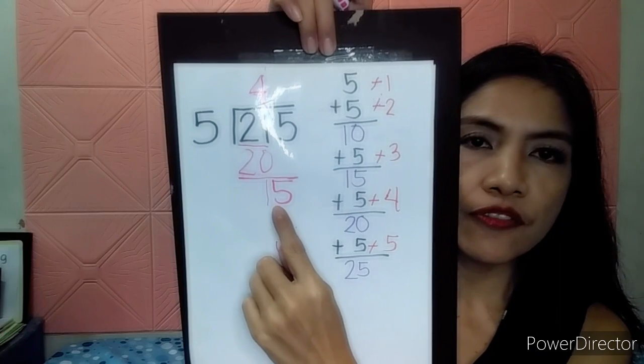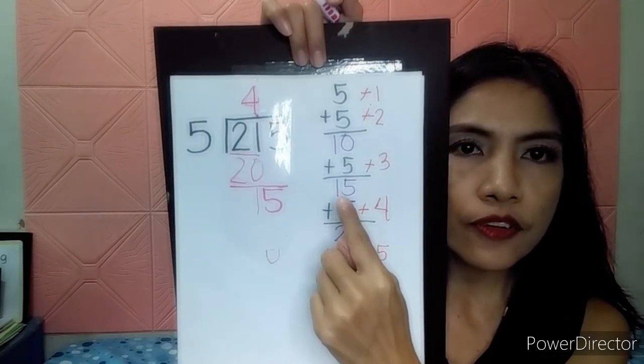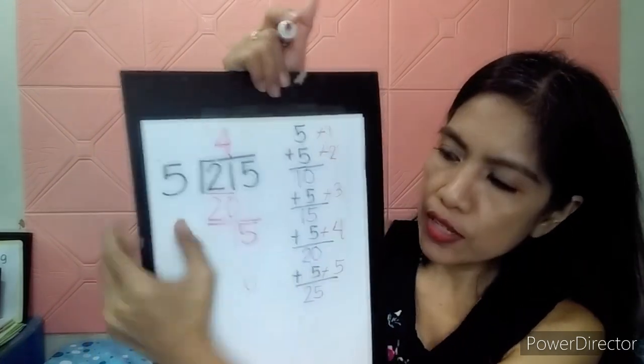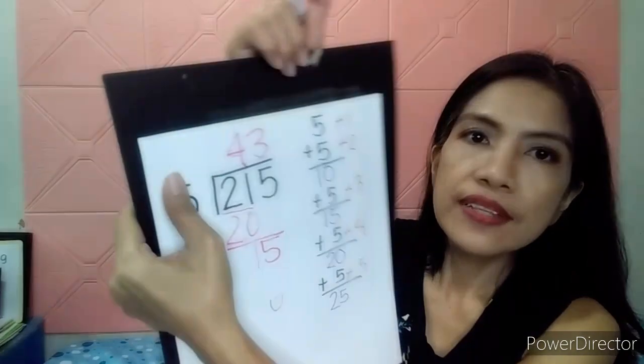There. Now we have 15. 15 divided by 5. Let's look for 15. Where's 15? 15 is here. And, it's number 3. So, let's write 3. This 3 should be here.